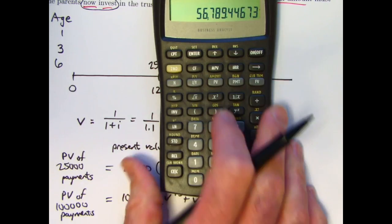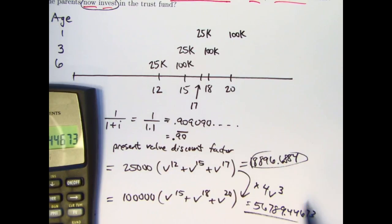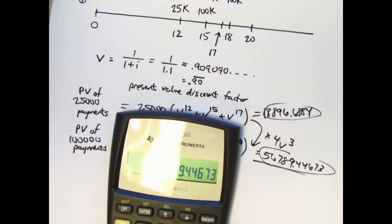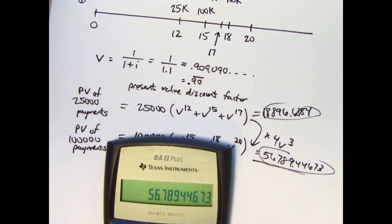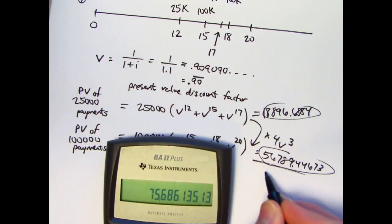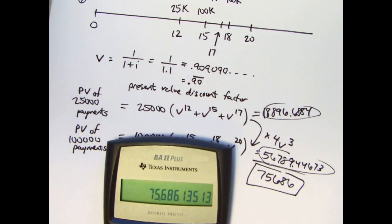Add these two amounts, this one and this one, and that will give us our final answer. Let's go ahead and add them. I've got the 56 in there already, plus 18896.6884. Let's go ahead and round our final answer to the nearest whole number, 75,686 is what we get. And that is the correct answer.